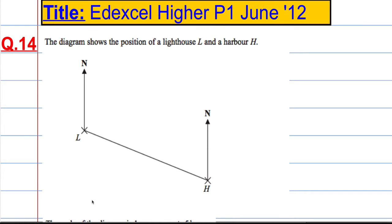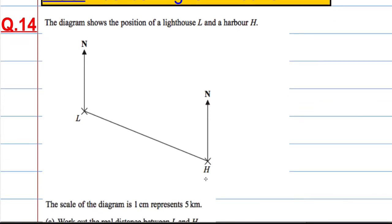Question 14. The diagram shows the position of a lighthouse and a harbour. So there's the lighthouse and there is the harbour. And we're told that the scale of the diagram is 1cm represents 5km.